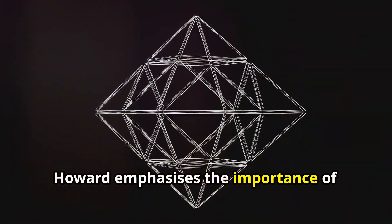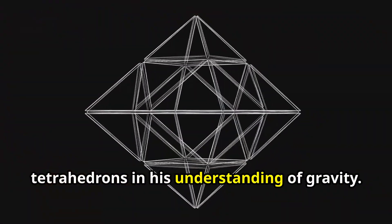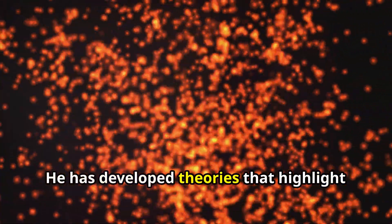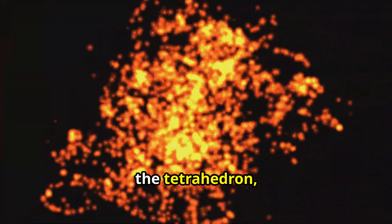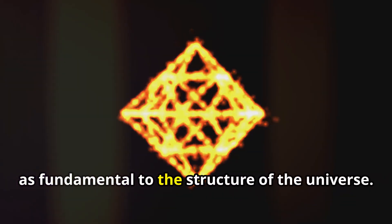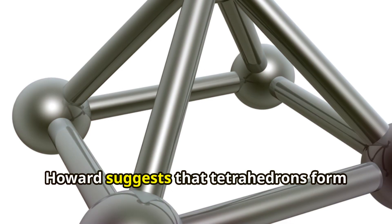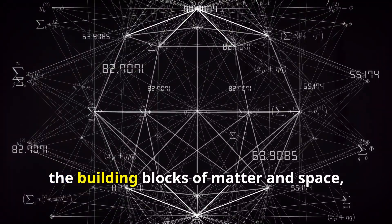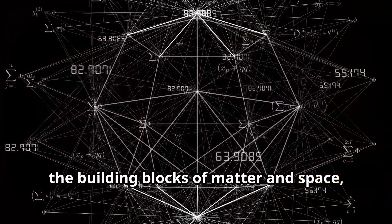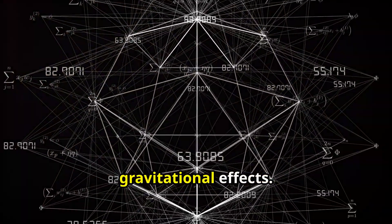Howard emphasizes the importance of tetrahedrons in his understanding of gravity. He has developed theories that highlight the tetrahedron, a four-faced geometric shape, as fundamental to the structure of the universe. Howard suggests that tetrahedrons form the building blocks of matter and space, with their interactions producing gravitational effects.